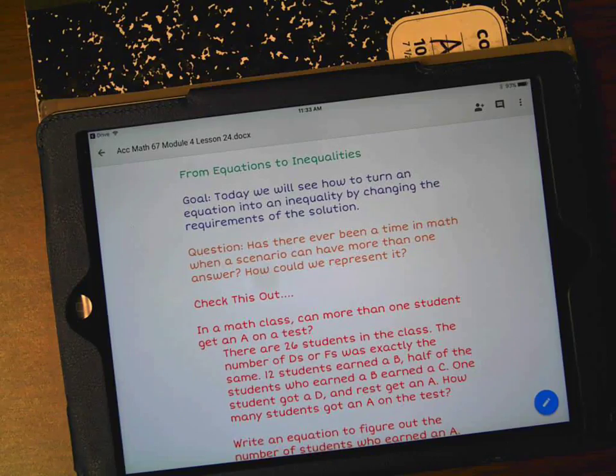If you get an 80 through an 89, it's a B. A 70 to 79 is a C. A 60 to a 69 is a D. And then anything below a 60 is an F. A time in math when we would need to have more than one answer would be when we are talking about all of the different possible scores that kids get on tests.